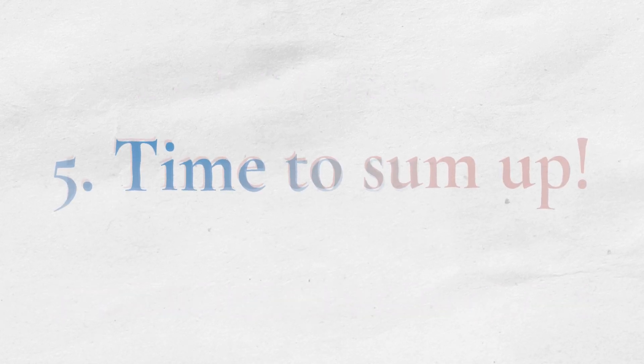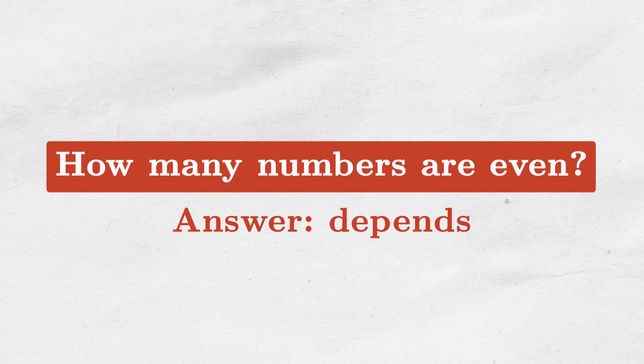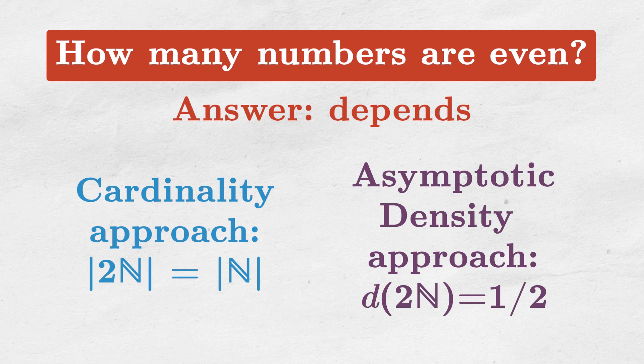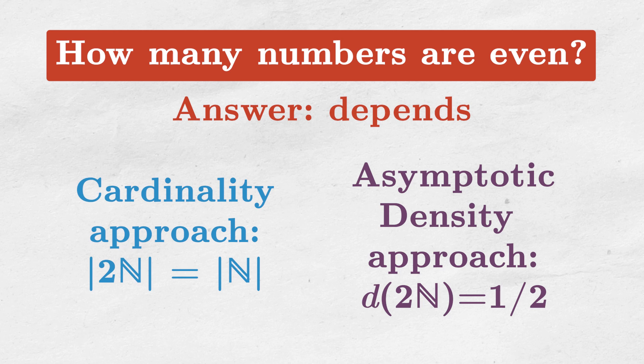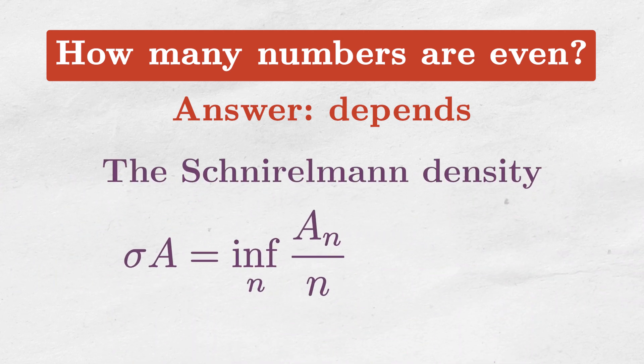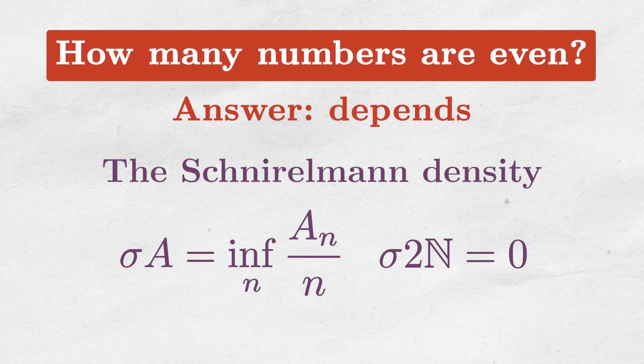To summarize, the answer to the question, how many numbers are even, depends completely on your interpretation of this question. We could see that all numbers are even, or exactly one half of numbers are even. But these are not the only possible answers. There are more densities than the asymptotic one. For example, the Schnierlmann density of the set of even numbers is zero. Counterintuitive, but the cardinality approach is not better.